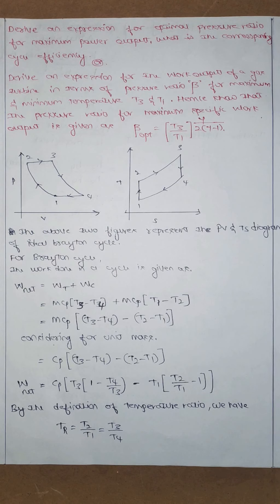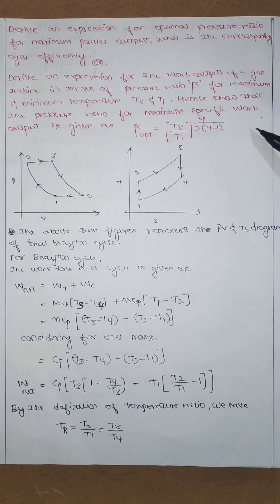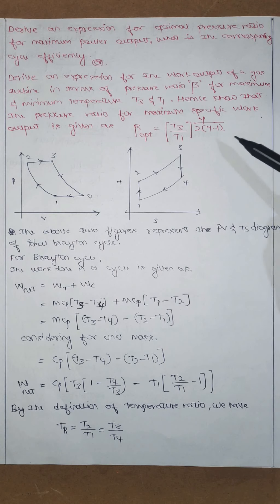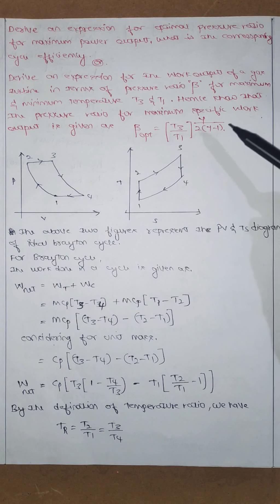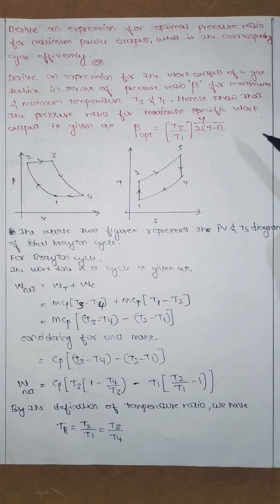The problem is sometimes specified as: derive an expression for the work output of a gas turbine in terms of pressure ratio beta, for maximum and minimum temperatures T3 and T1. Hence show that the pressure ratio for the maximum specific work output is given by beta_optimal equal to (T3/T1) raised to the power of gamma divided by 2 times (gamma minus 1).